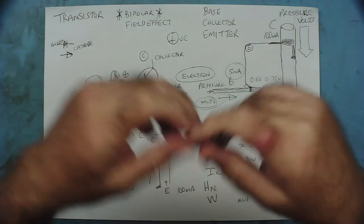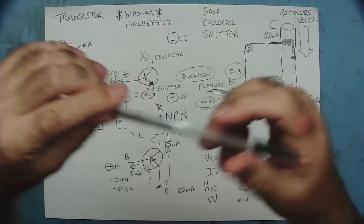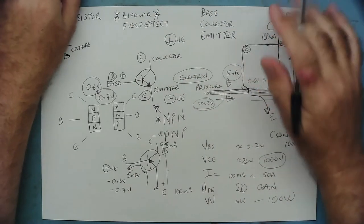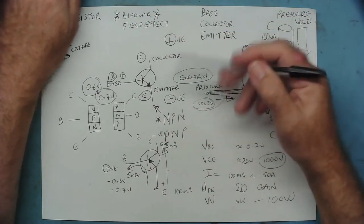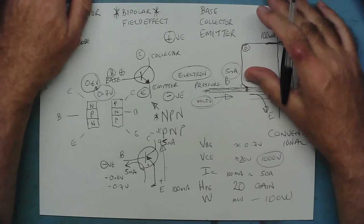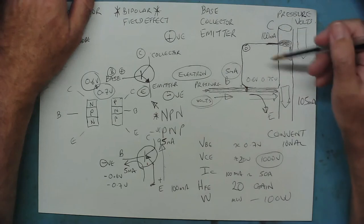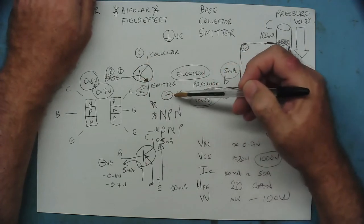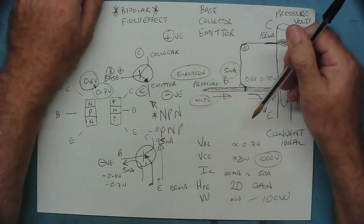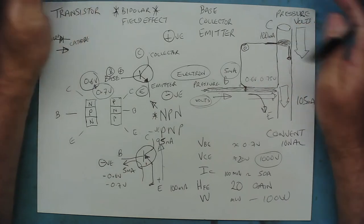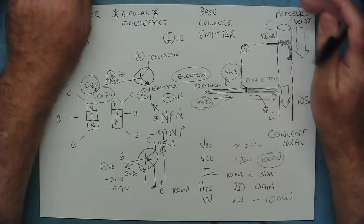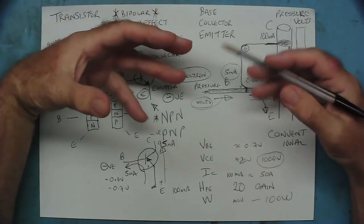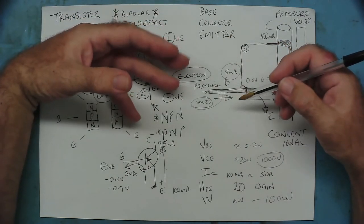Hi guys, welcome to part 2 of the transistor tutorial. In the first part, I hope you watched this, we looked at transistors, and particularly bipolar transistors, and we're going to continue looking at bipolar transistors in this next installment. We discussed the analogy using water pipes of what a transistor actually does, we identified the terminals: base, collector, emitter, and the different types of transistors, PNP and NPN, and then we had a look to see what some through-hole transistors look like physically, and we had a look to see how a transistor is specified - what ratings specify a transistor in various volts.